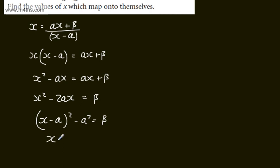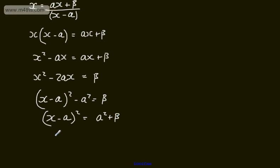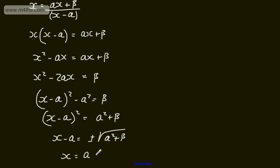Adding alpha squared to both sides, x minus alpha all squared will be equal to alpha squared plus beta. Taking the square root of both sides, x minus alpha will be equal to plus or minus the square root of alpha squared plus beta. Then simply adding alpha to both sides, x will be equal to alpha plus or minus the square root of alpha squared plus beta.